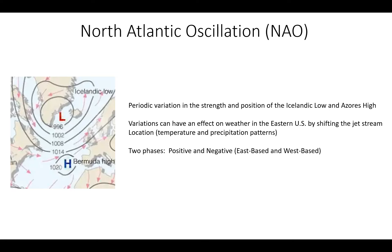The first thing I want to start off with is information about the NAO, or the North Atlantic Oscillation. Specifically, what is the NAO? This is generally a periodic variation in the strength and position of the Icelandic low, which is up here to the north, generally in the vicinity of Iceland. And then the Azores High or the Bermuda High to the south — the variation in strength between this semi-permanent low pressure system known as the Icelandic low, and this semi-permanent high pressure system known as the Bermuda High or the Azores High.